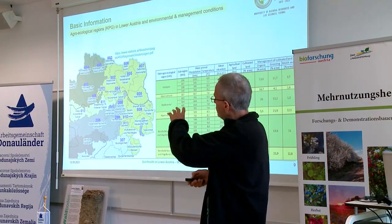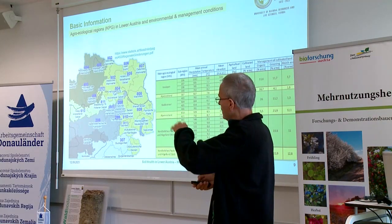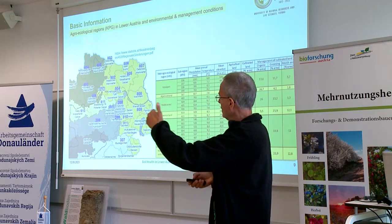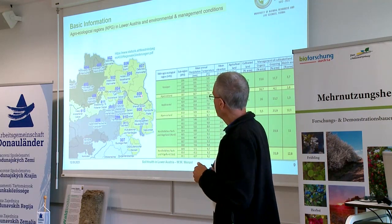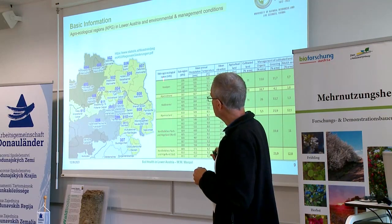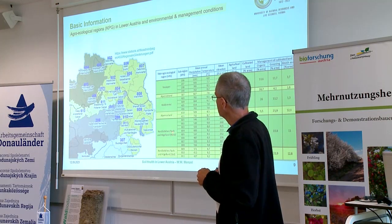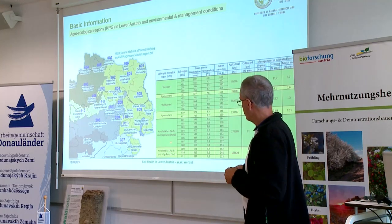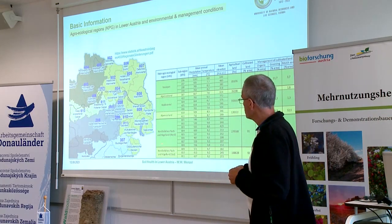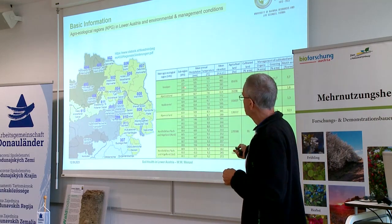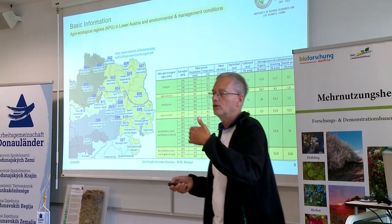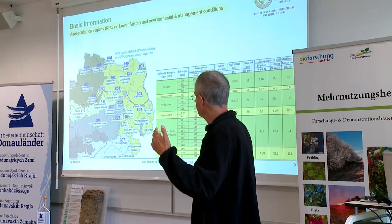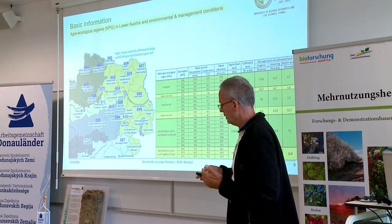I will show you some of the data and discuss them in relation to the soil health directive along main production areas, main agroecological regions — Hauptproduktionsgebiete in German — and sometimes in relation to subregions, ecologically defined subregions, that means Kleinproduktionsgebiete.